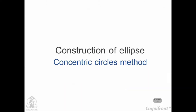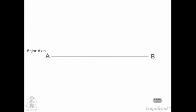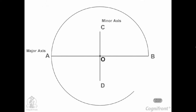Concentric circles method to draw an ellipse. Draw the major axis AB and the minor axis CD intersecting each other at O. With center O and diameters AB and CD respectively, draw two circles.